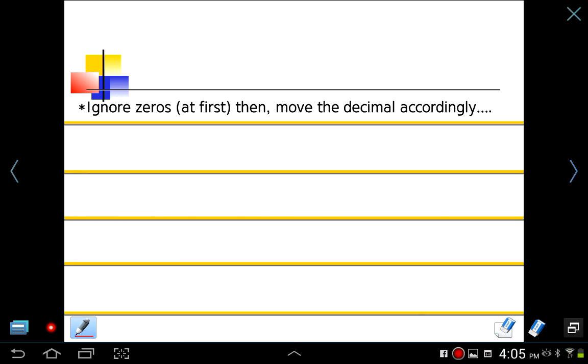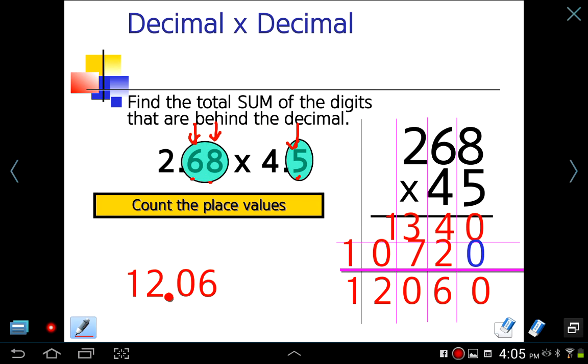Let me go back for a second here. So the decimal in this instance went over three places. One, two, three. Okay? So there you have it.